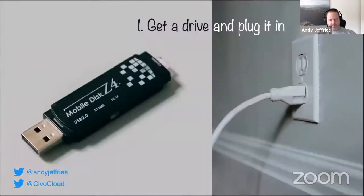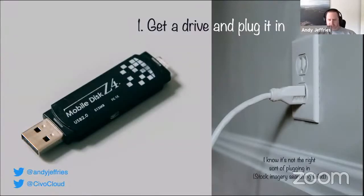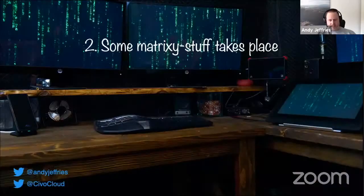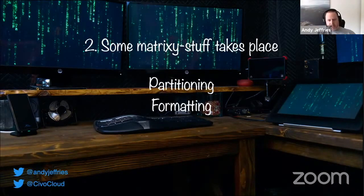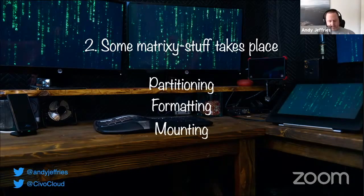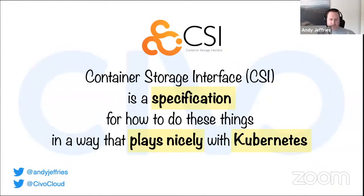In the real world, if you think about it as these steps: the first stage is to go and get a drive from the vault and plug it into your computer. The second step involves some technical matrix-y stuff — for Windows users this is taken care of more by the operating system, but if you're using Linux, you'll have to do a lot of this yourself. Things such as partitioning the drive, formatting it with a file system, and then mounting it — making it appear as a drive to the operating system. And CSI, the container storage interface, is a specification for doing exactly those things in a way that plays nicely with Kubernetes.